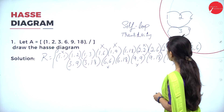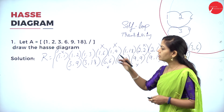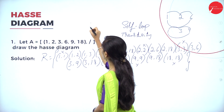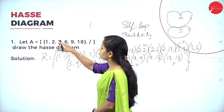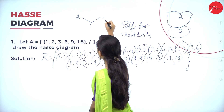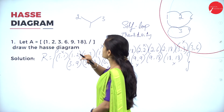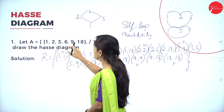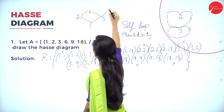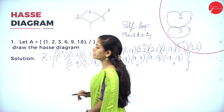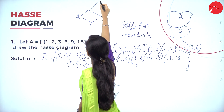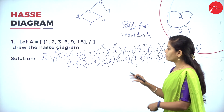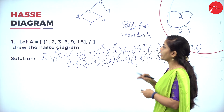After removing all transitive edges, we draw the Hasse diagram. The first element is 1; above it are 2 and 3, since 1 divides both. Then 6 is above 2 and 3, since both divide 6. Element 9 is above 3, since 3 divides 9. Finally, 18 is at the top, with 6 and 9 both dividing 18. This is the Hasse diagram for the given set.